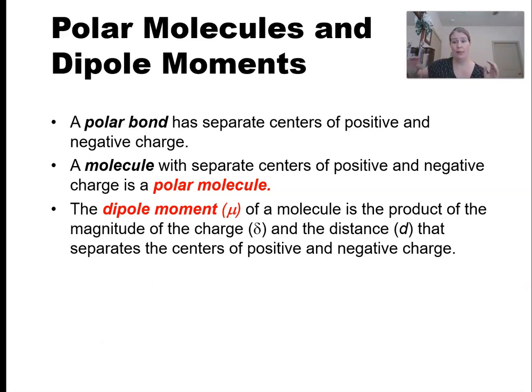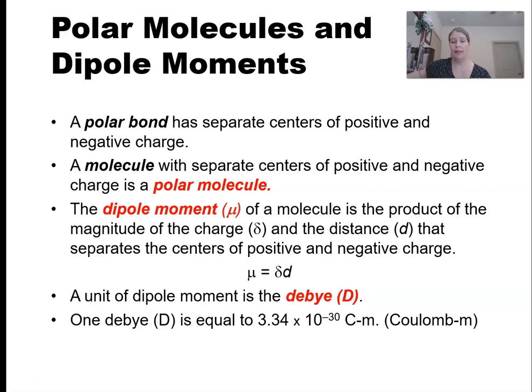It has to do with the distance and the amount of charge difference, the strength of the partial positive and negative charge. So if I have a molecule which contains lots of very strongly polar bonds, then it will have a larger dipole moment. The unit of the dipole moment is the Debye. You'll see that sometimes in data tables. One Debye is equal to a very small number of Coulombs.